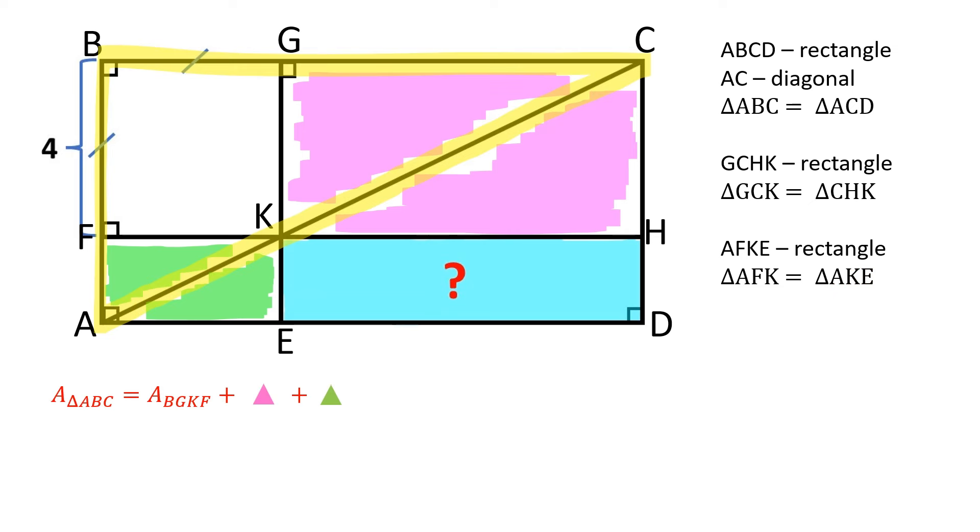The area of triangle ABC is equal to the area of BGKF plus one pink triangle and one green triangle. The area of triangle ACD is equal to the area of HDEK plus one pink triangle and one green triangle.